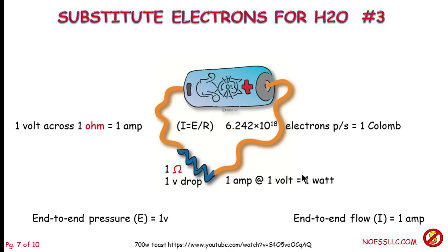So my voltage is one and my resistance is one, so therefore I can draw one amp, providing that the chemicals in here are sufficient to be able to do that. So one amp at one volt equals one watt. So I'm actually expending one watt of energy. This thing is heating up. So therefore my end-to-end pressure, my voltage, is one volt. My end-to-end flow is one amp using this very simple circuit.